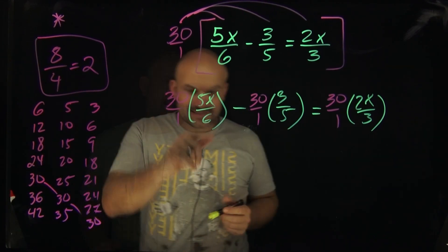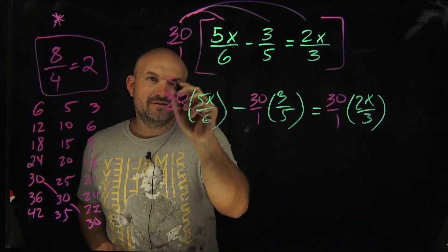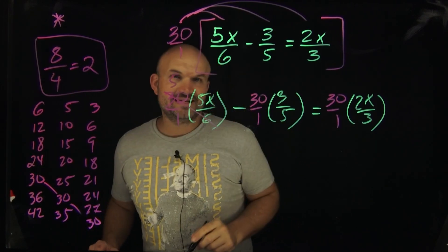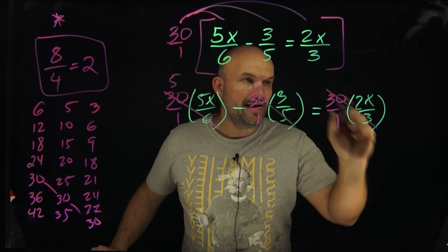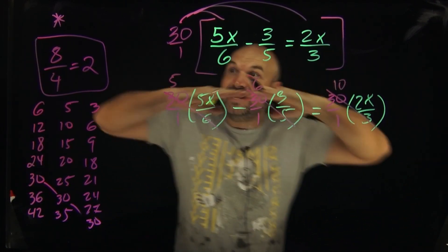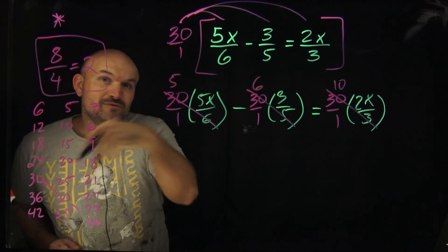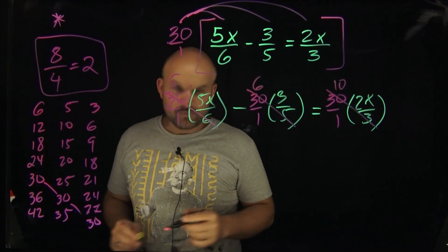Now, but here's the important thing. Six divides into 30 how many times? Five times. Five divides into 30 how many times? Six. Three divides into 30 how many times? 10. Guess what, guys? We took our denominators and divided them into our numerator. We got rid of, we got exactly what we wanted. Now, all we simply need to do is multiply this one more time.